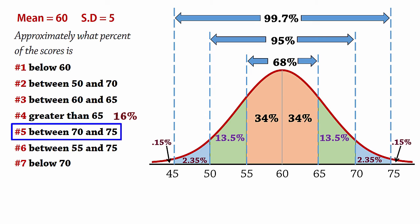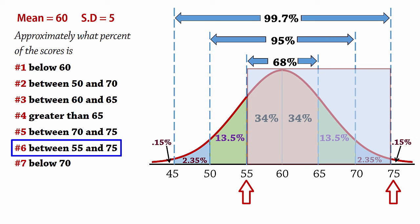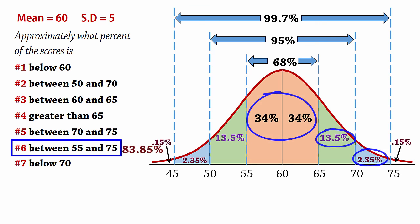For number 5, the percent between 70 and 75 is approximately 2.35%. For number 6, the percent between 55 and 75 can be found by adding 68% plus 13.5% plus 2.35%, which gives 83.85%.